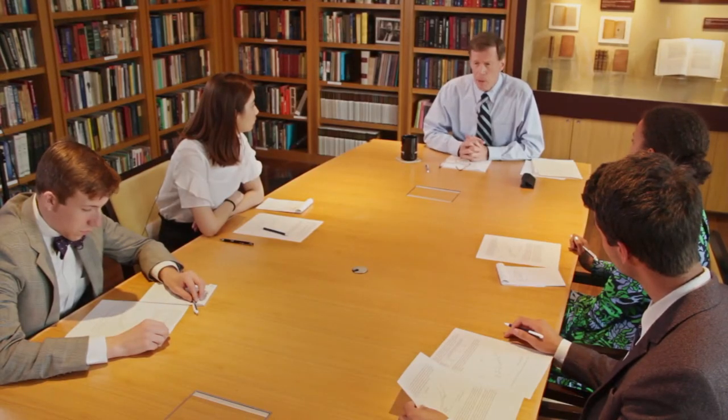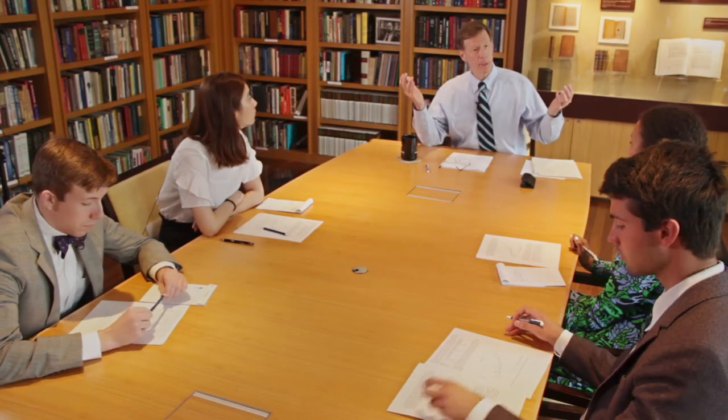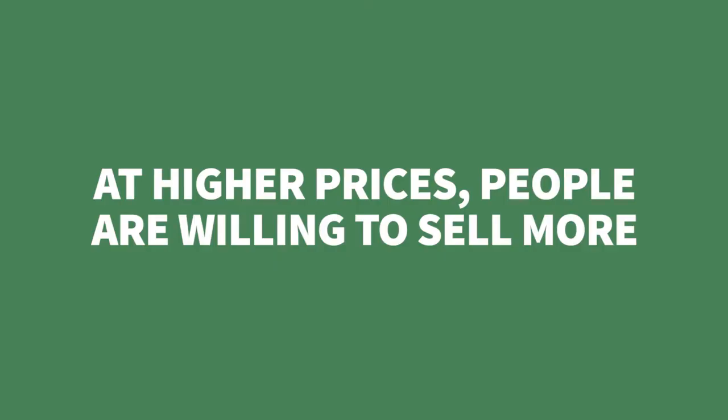Let's start right in with the basic insight about the law of supply, to show those who are new to economics that a lot of what's in economics is really familiar — what's unfamiliar is the terminology and the graphical apparatus. Would the suppliers, the sellers of something, be more eager to sell more at higher prices or at lower prices? Higher prices. That's the law of supply. Other things being equal, at higher prices, people are willing to sell more of a good than at lower prices.